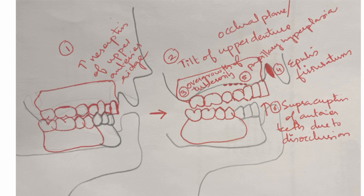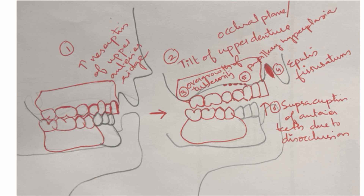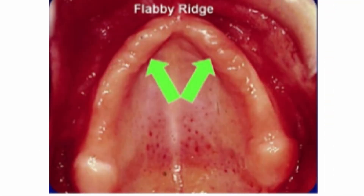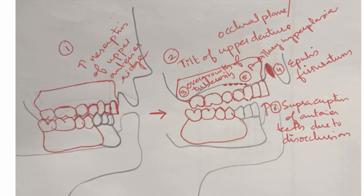Over time, there will be increased resorption in the maxillary anterior ridge because the patient is always concentrating the occlusal load in the anterior region. Because of the loading and unloading of forces in the anterior region, the patient will develop what is called a flabby ridge in the anterior maxilla. Instead of firm tissues, the maxillary anterior ridge is replaced by thick fibrous tissues — this is the flabby ridge.